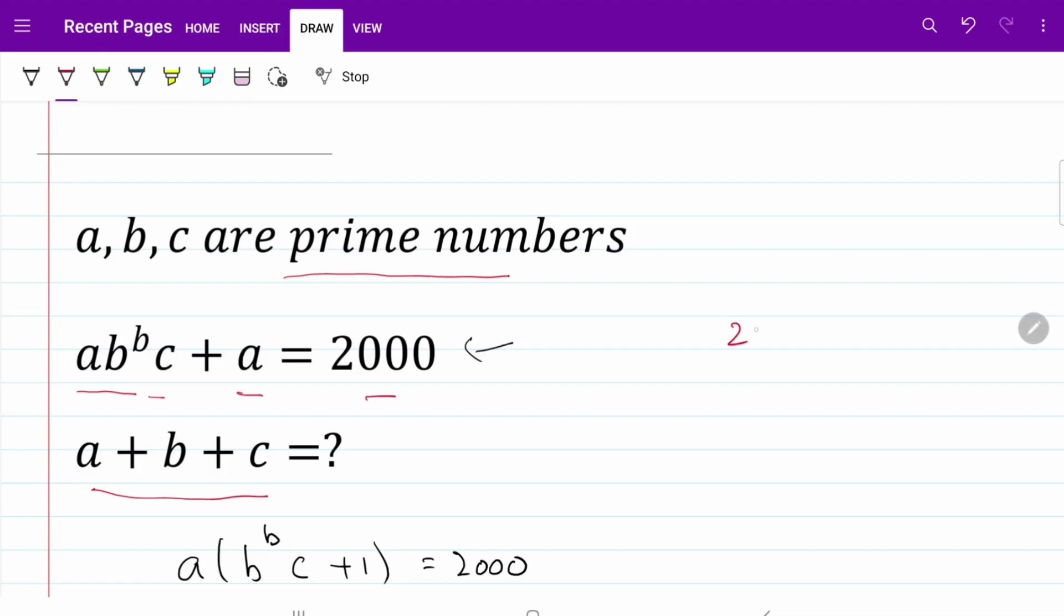So what I have is 2,000. I'm going to put a 2 here, so that's 1,000. Another 2, that's 500. Another 2, 250. Put a 5, that's 50. Another 5, that's 10. Another 5, that's 2. So in other words, I can rewrite 2,000 as 2 to the power of 4 multiplied by 5 cubed.